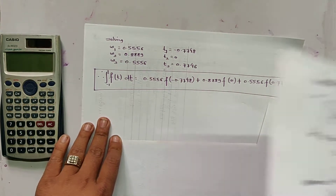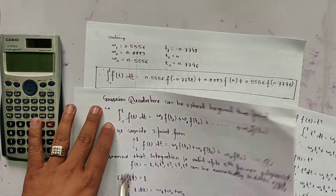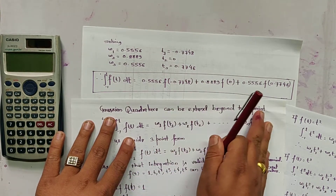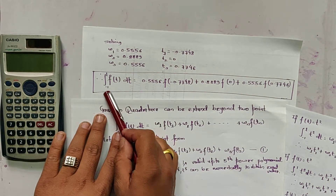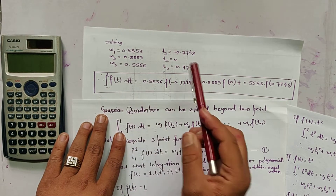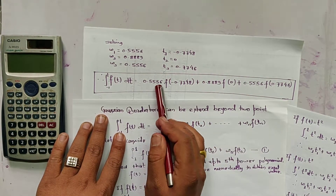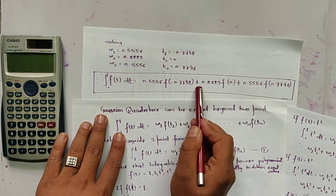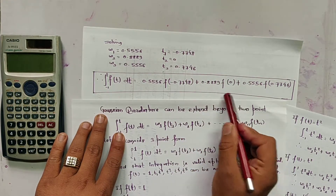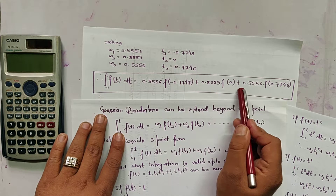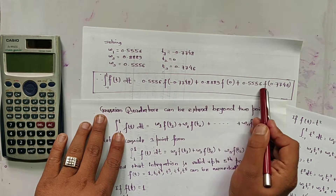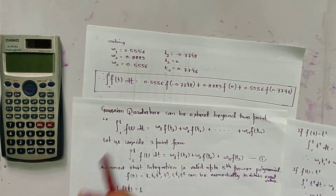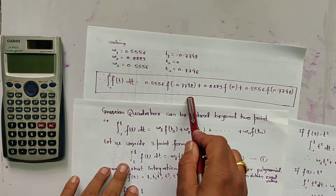By substituting these values into equation 1, we get the formula for the Gaussian three-point form: the integral from minus 1 to 1 of f(t) dt equals 0.555556·f(−0.7746) + 0.8889·f(0) + 0.5556·f(0.7746). This is the expression for calculating the integration using Gaussian three-point quadrature.